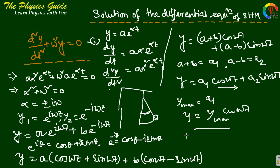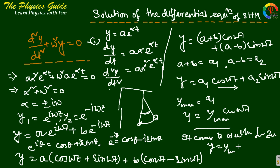When the pendulum starts oscillating from the zero position — the normal vertical condition — the solution becomes y = y_max·sin(ωt). These are the two special physical cases of the general solution.